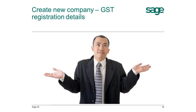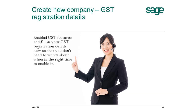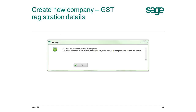Malaysia GST is only effective around 1 April 2015 — why enable it now? No worries, GST features will only be shown when the effective date has been reached. You are still able to use the system as usual without the GST features shown. Enable GST features and fill in your registration details now so you don't need to worry about when to enable it — let the system remember for you. When you first log in on 1 April 2015, a message will inform you that the GST feature is now enabled.